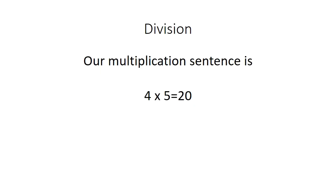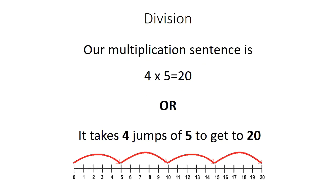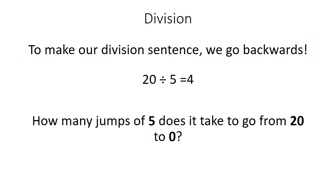If our multiplication sentence is 4 times 5 equals 20, we can observe a number line and say that it takes 4 jumps of 5 in order to get to 20.